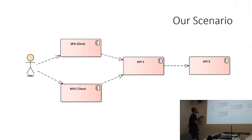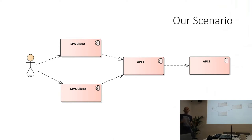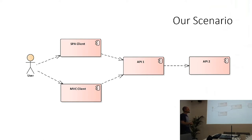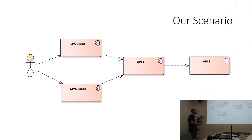In our scenario we'll have a single page client application and an MVC client application. There's quite a big difference between the two, because a single page application runs completely in the user's browser, so any malicious hacker can do anything with your application — it's much harder to secure. The classical web application using form postbacks, like ASP.NET Core MVC, has an advantage because part of your code runs on the server, which you can secure.